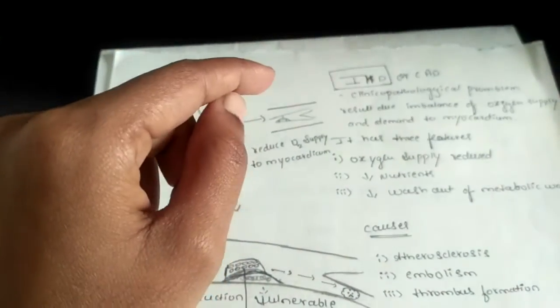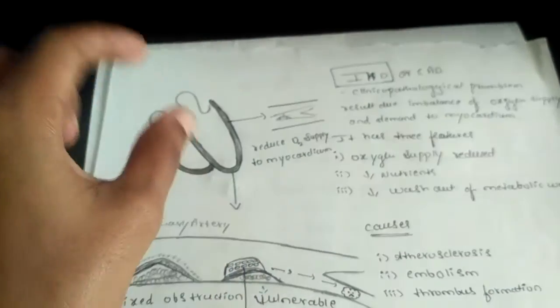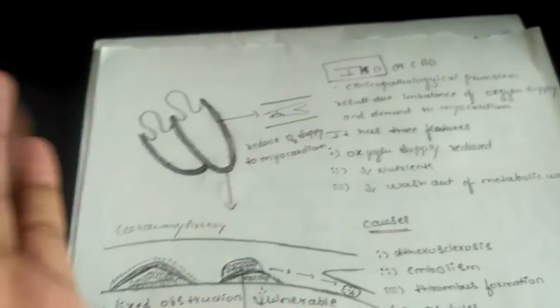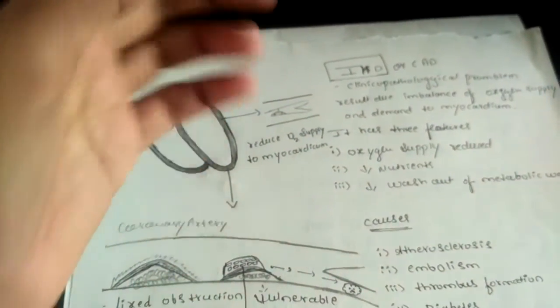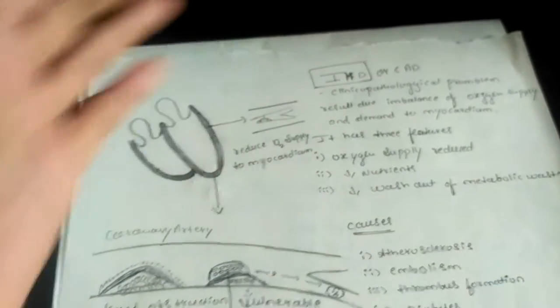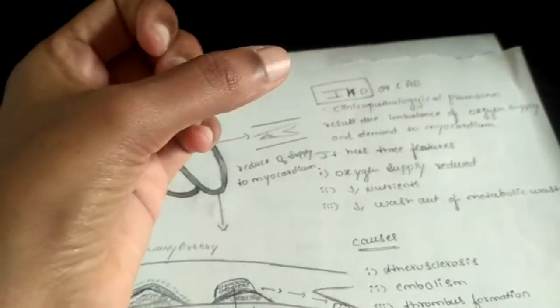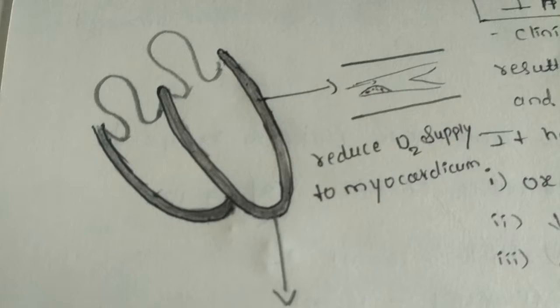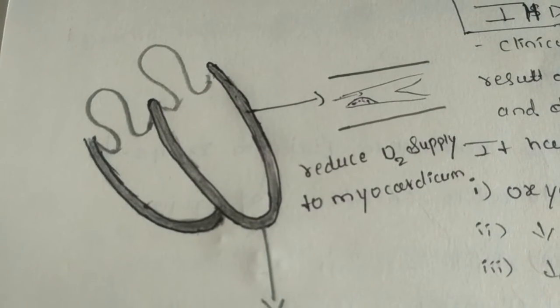During the diastolic phase, it relaxes and during systole, it is going to contract. It is going to contract the ventricles. Ventricles are contracted by the myocardium.